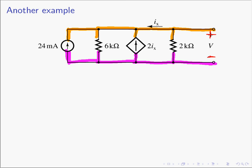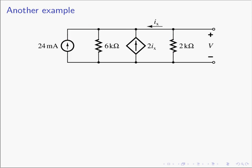Since they're all in parallel, we can define a voltage plus-to-minus V — the polarity doesn't matter as long as you keep track of everything; it all works out in the end. Maybe in this case we want to find all the powers absorbed, which is a great check. Let's write KCL for the upper node.